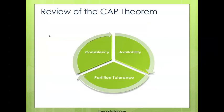Now let's talk about data consistency in Cassandra. To do that, we first need to review what's called the CAP theorem. This theory states that in a distributed database system, you can have two of three things: strong consistency — meaning you're reading and writing the latest copy of a piece of data; strong availability — meaning if one or more nodes go down, the system continues to operate; or strong partition tolerance — meaning if messages are lost between nodes, the system continues to operate.